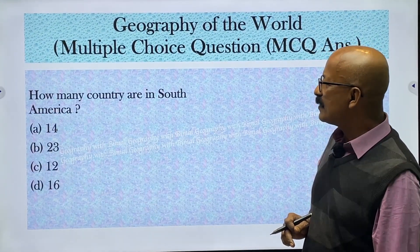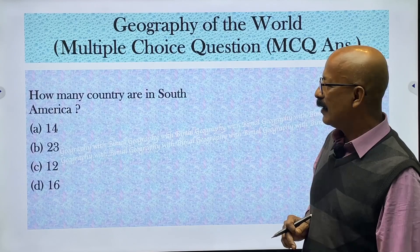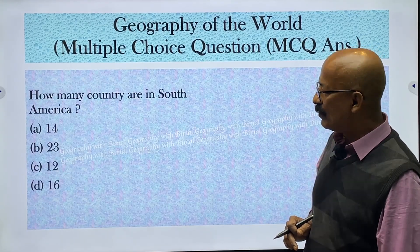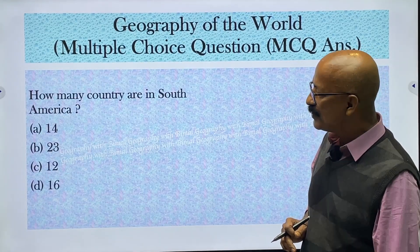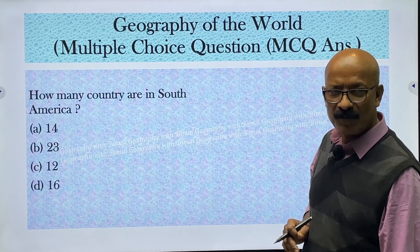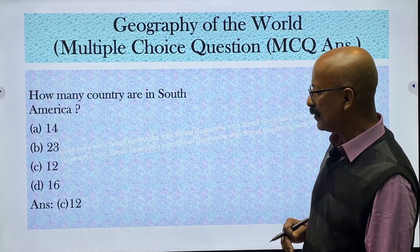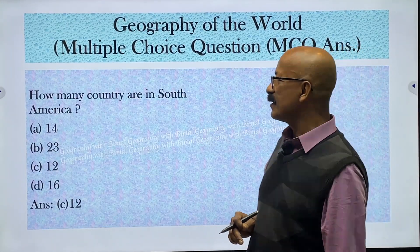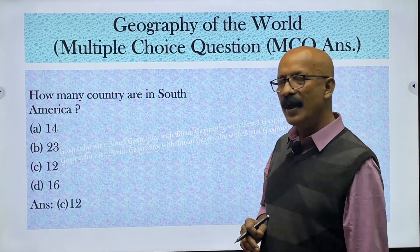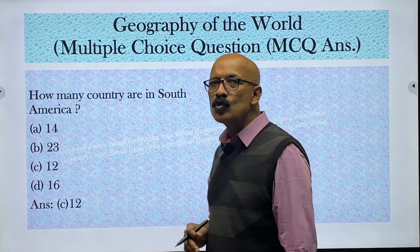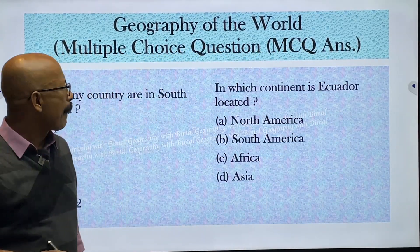How many countries are in South America? Options are 14, 23, 12, and 16. The answer is 12 — there are 12 countries in South America.